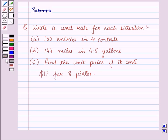Hello and welcome to the session. In this session, we will discuss a question which says: write a unit rate for each situation. Part A: 100 entries in 4 contests. Part B: 144 miles in 4.5 gallons. Part C: find the unit price if it costs $12 for 8 plates.